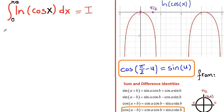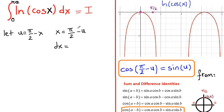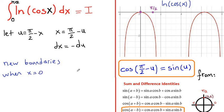And do u substitution. Let u be equal to pi over 2 minus x. If you solve for x in this equation, x is equal to pi over 2 minus u. Derivative of x is dx and derivative of the right hand side is negative du. Now we are going to rewrite everything in terms of u. But just before that, we need to arrange the new boundaries. When x equals to 0, we would like to know the value of u. And when x equals to pi over 2, we would like to know the value of u.